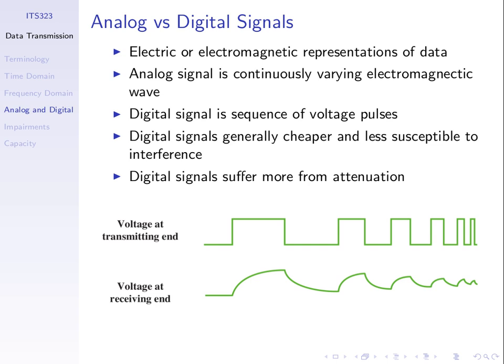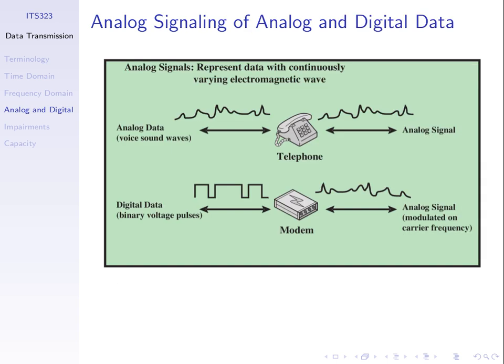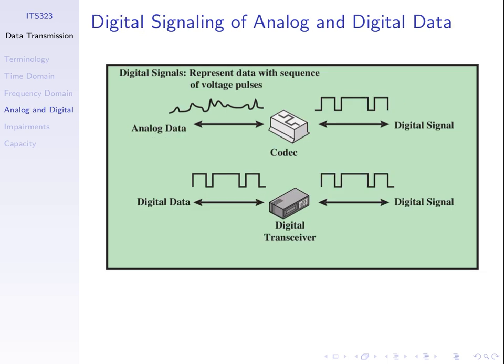We can have analog and digital data, and the signals we send can be either analog or digital — we can map between them. We'll return to analog and digital signals and transmission in a later topic, along with telephones, modems, codecs, and transceivers.